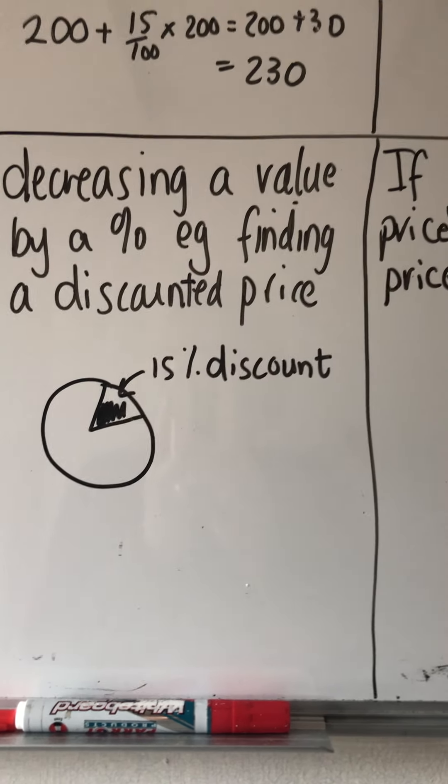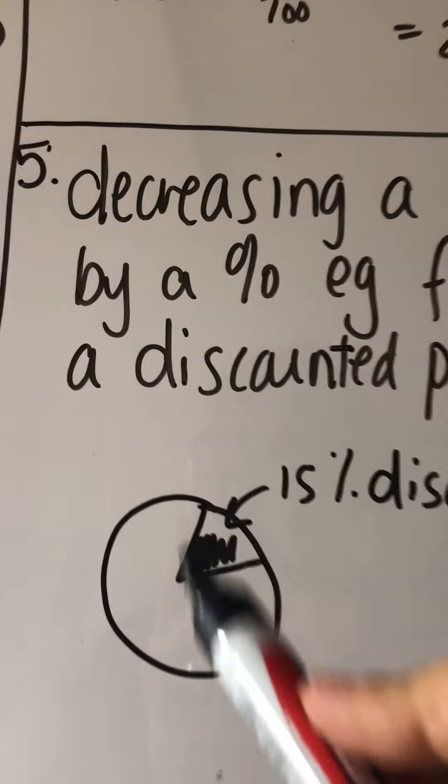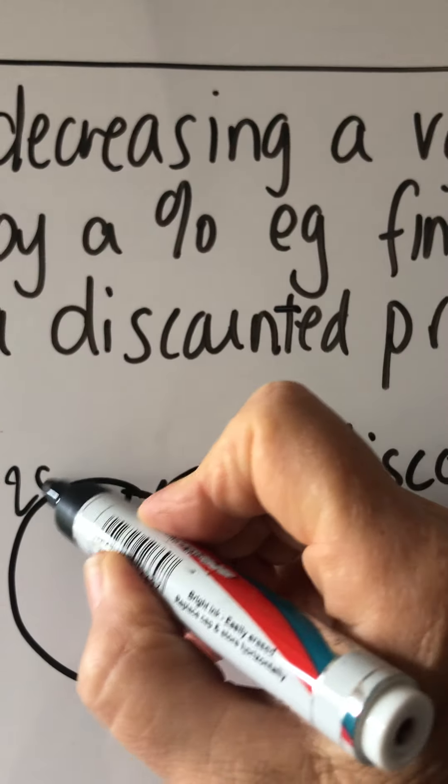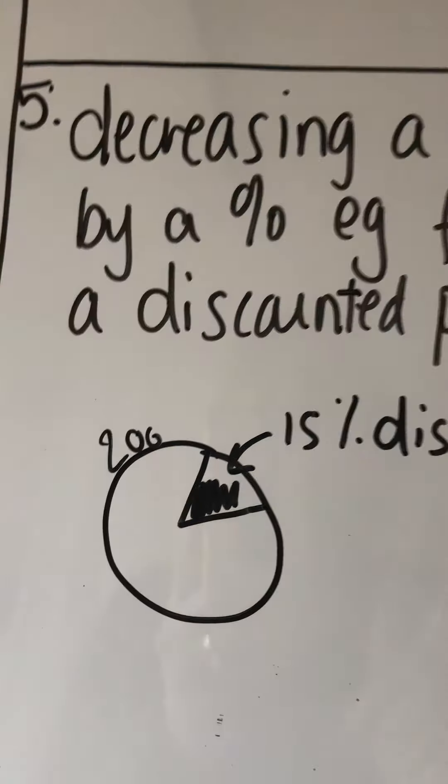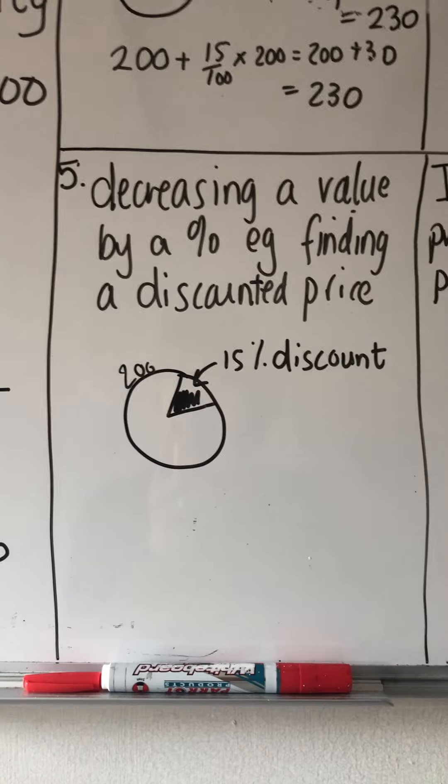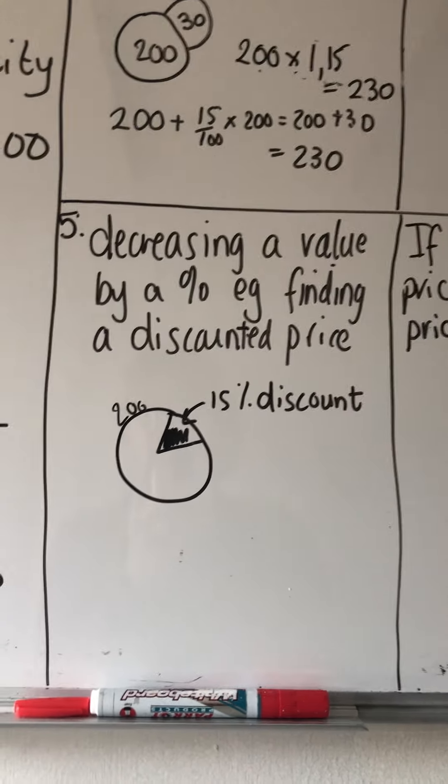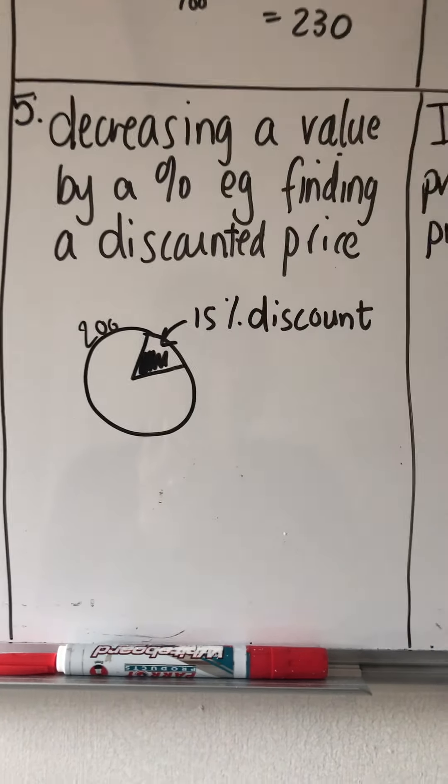So let's say there was an item that was 200 Rand. Take the circle as being the original price of the item, and it's 200 Rand, and you're given a 15% discount. What would you pay?